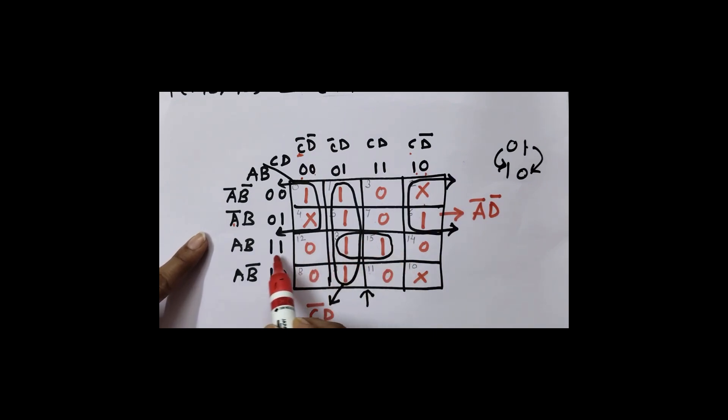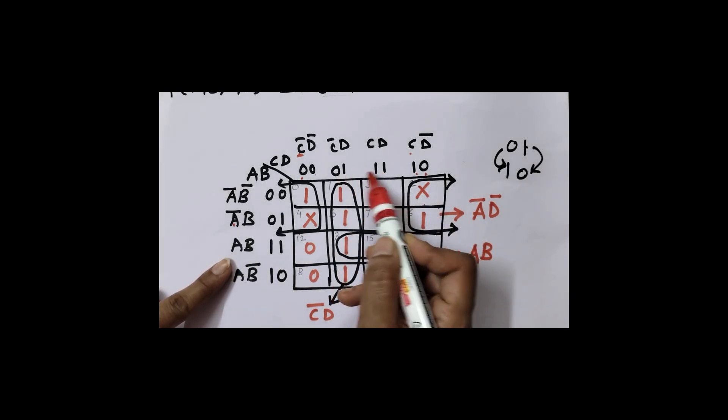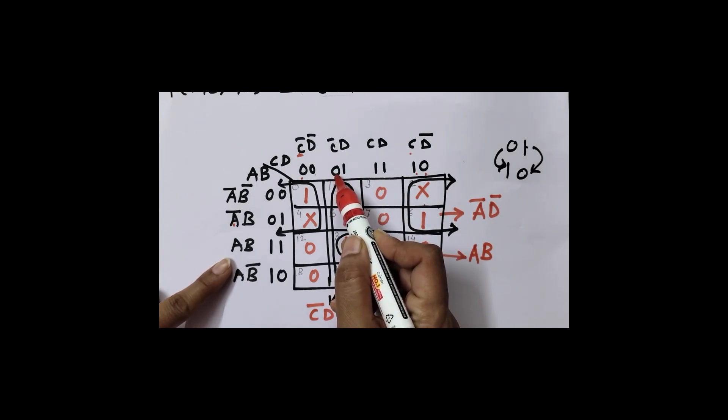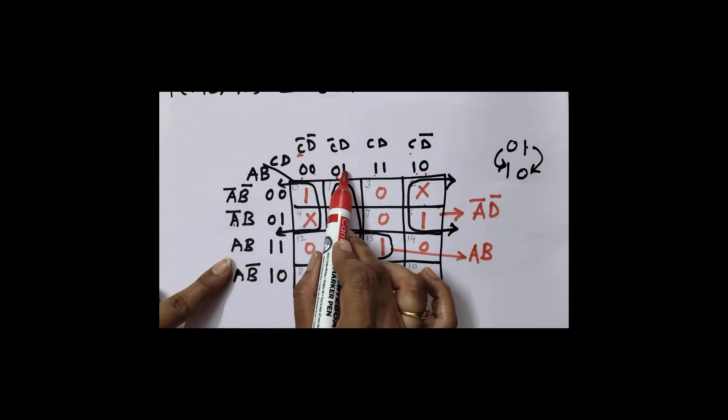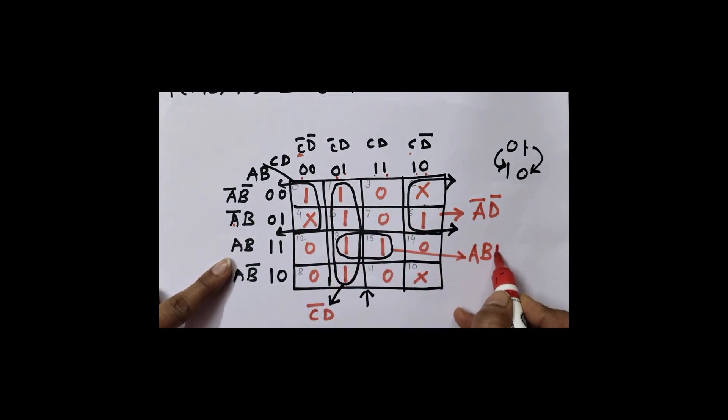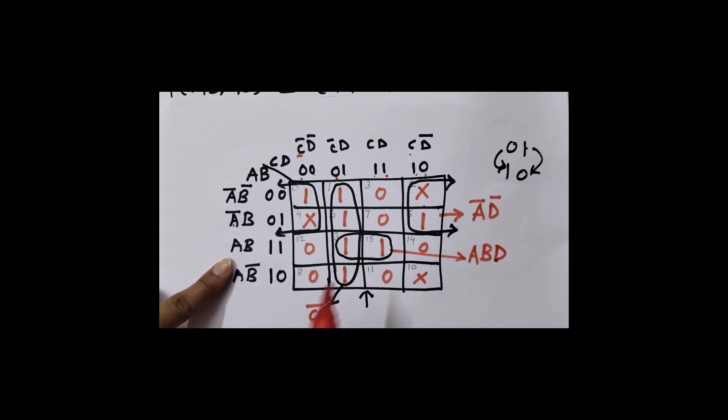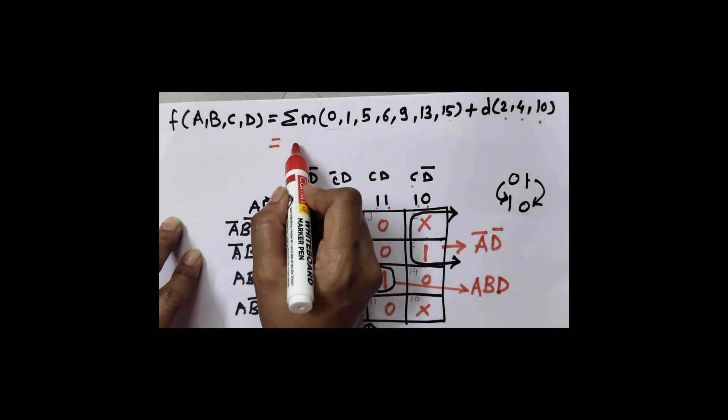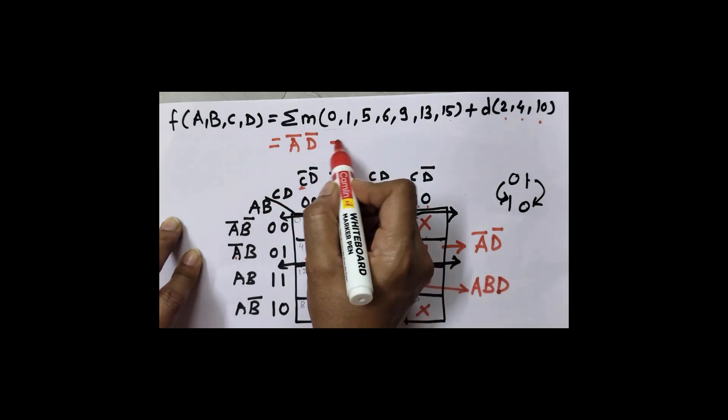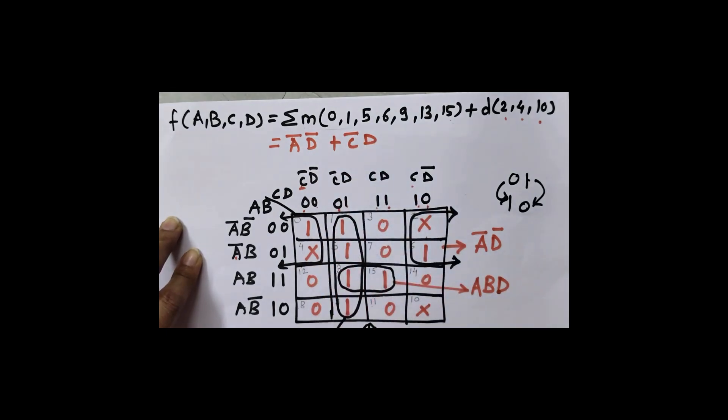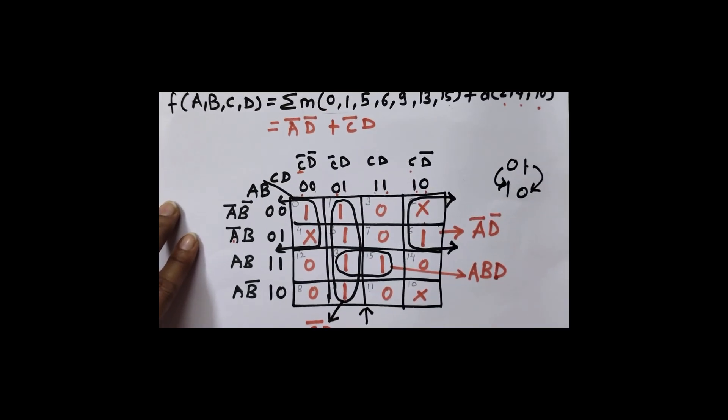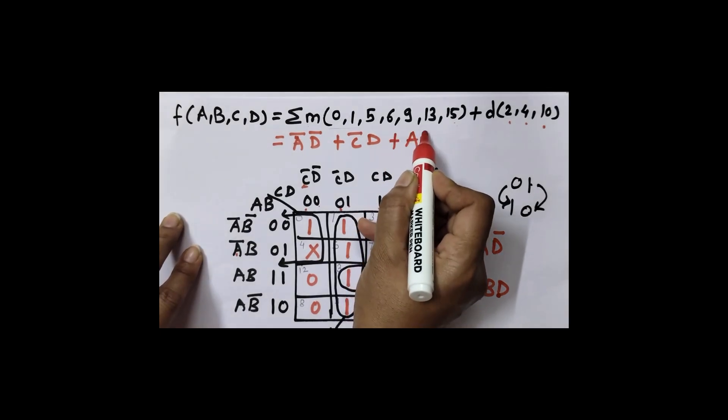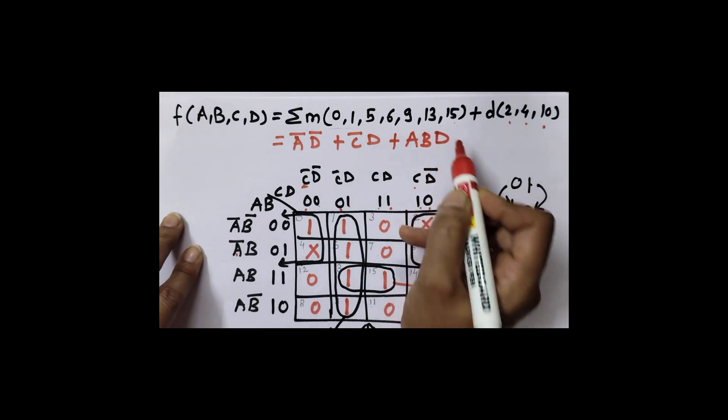Then for this pair I have only this row. So for this A and B are compulsory: A, B. But here in column I have 2 columns, so I will compare them. C is 0 here, 1 here, so I will skip C. But what about D? D is 1 here and here also it is 1, so it is D. So equation for these min terms: for these min terms my equation is A bar D bar plus C bar D, this C bar D plus A, B and D.